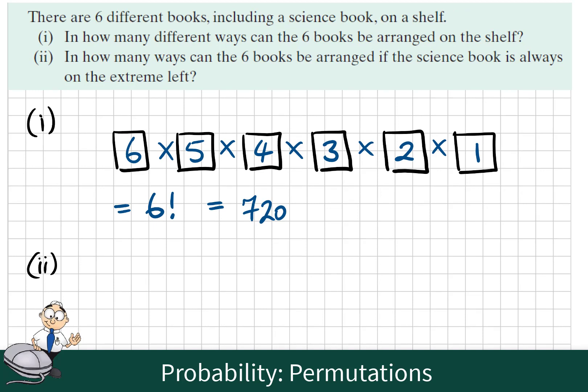In the second question there is a restriction in place. So this time we are told that the science book has to be on the extreme left. So let's again create our six positions.